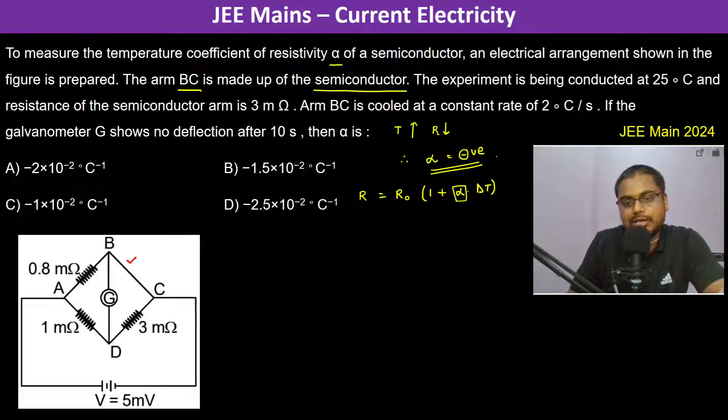And alpha is actually negative. So when the temperature rises, this entire thing becomes less than one, therefore R decreases. The experiment is being conducted at 25 degree centigrade.